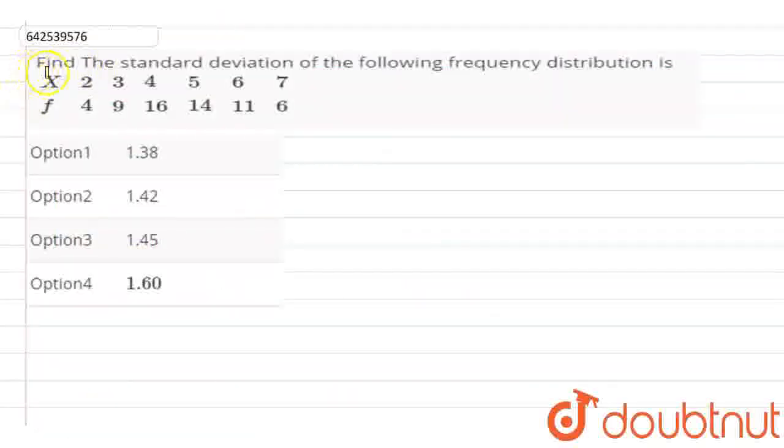Hello students, in this question we have given x distribution and their frequency. We need to find the standard deviation of this frequency distribution. First of all we have to make a table.